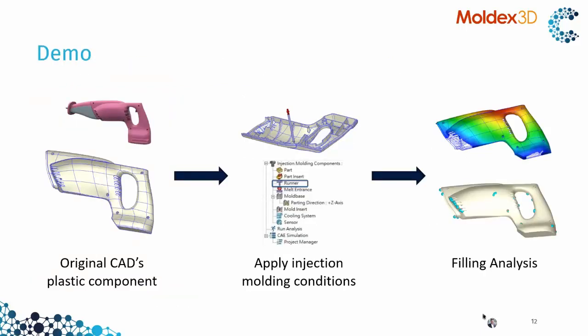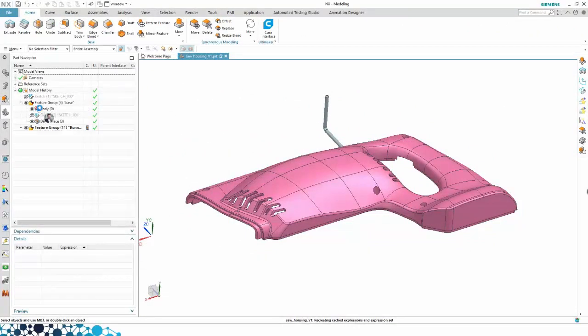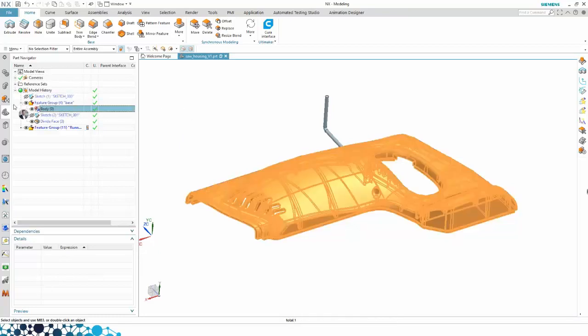So if we look at the demo we're going to do right now: first we're going to show the default part in NX, then start from there to the eDesign Sync module within NX to prepare the simulation. After that Lery is going to show the results. So here is NX, and here I have a normal part.